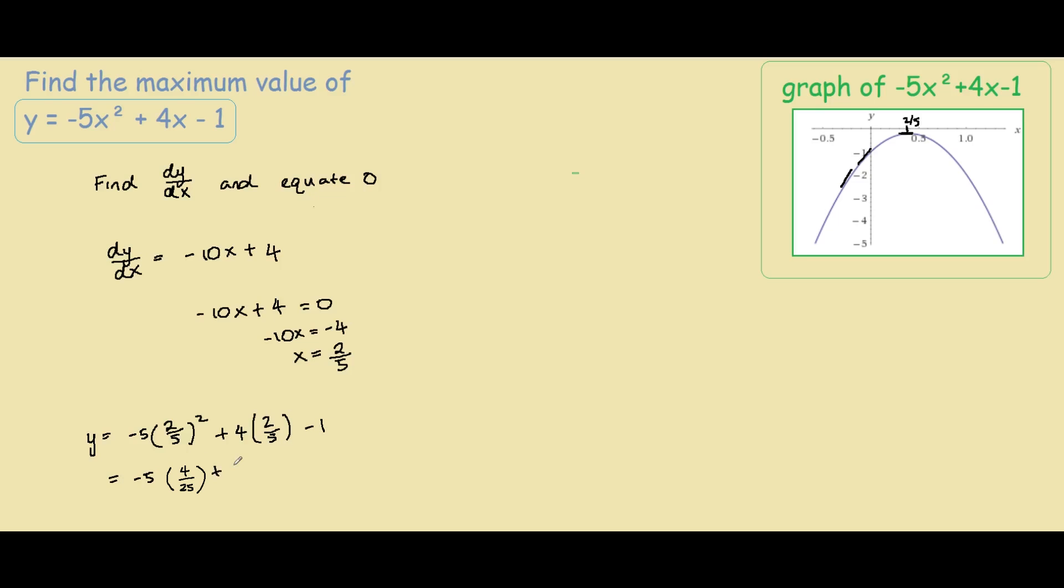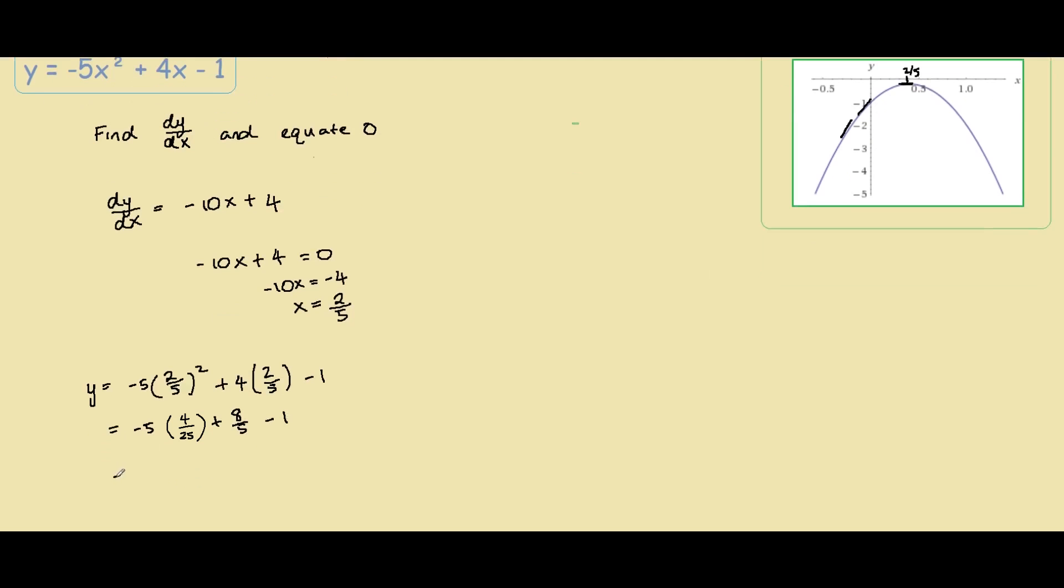So what is this? Minus 5 plus 4 times 2 is 8 over 5 minus 1. So actually if we solve this whole problem here, it would equal to negative 1 fifth.